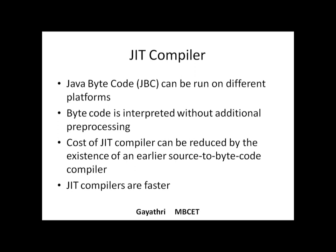This byte code interpretation is done with the help of a JIT compiler. The cost of a JIT compiler is very high, but it can be reduced using a source-to-byte-code compiler — otherwise JIT has to perform the entire translation. So the task of JIT is only to get the byte code, convert it into machine-dependent object code, and execute it. JIT compilers are faster than other compilers.